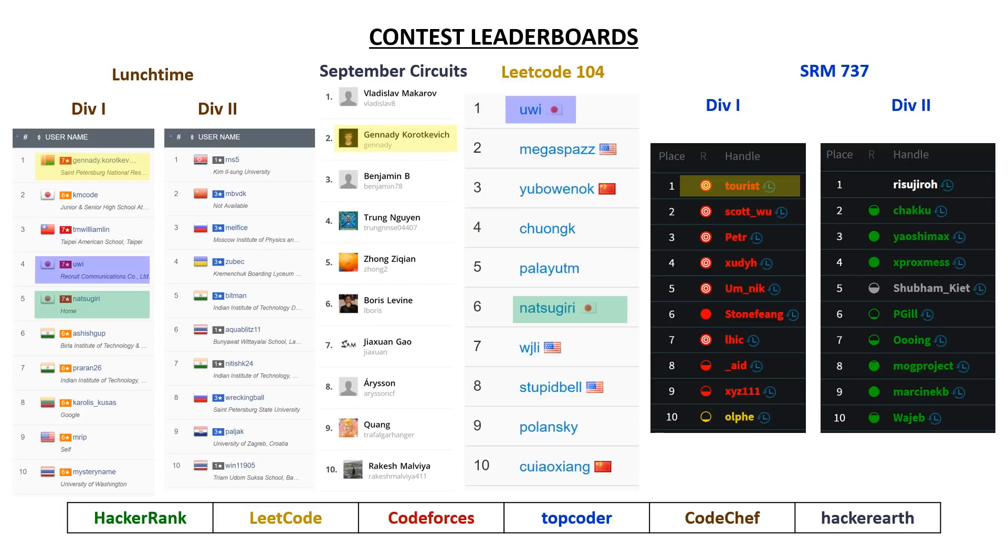We also had Yui placing fourth and first in the division one CodeChef lunchtime contest and LeetCode contest, respectively, as well as Natsugiri placing fifth in the CodeChef Div 1, and sixth in the LeetCode contest. And furthermore, in the division one TopCoder contest, we also had Scott Wu, Petra, XUDYH, and Omnic rounding out the top five.